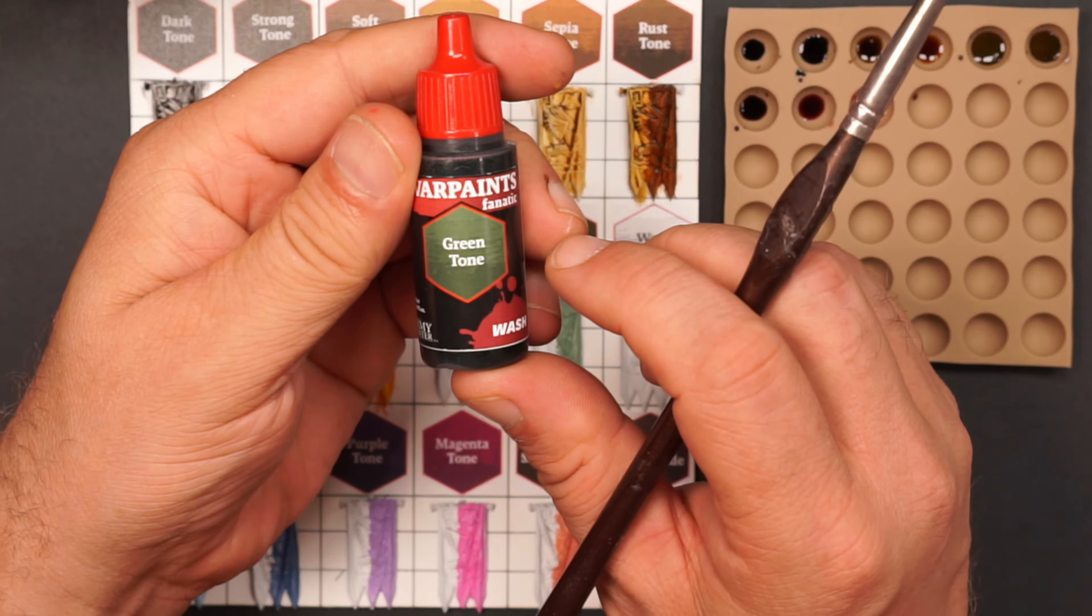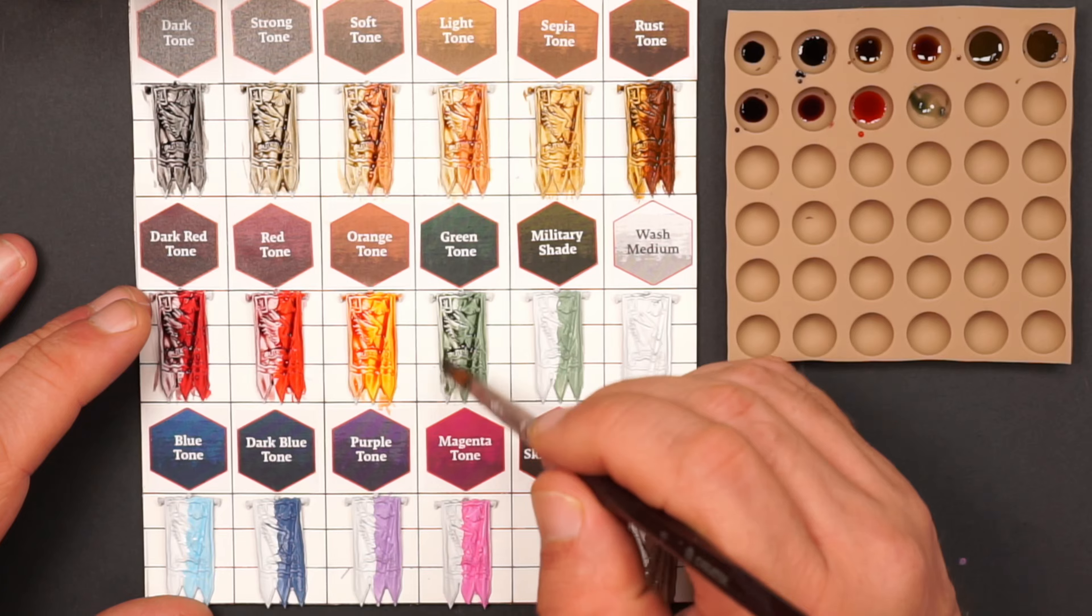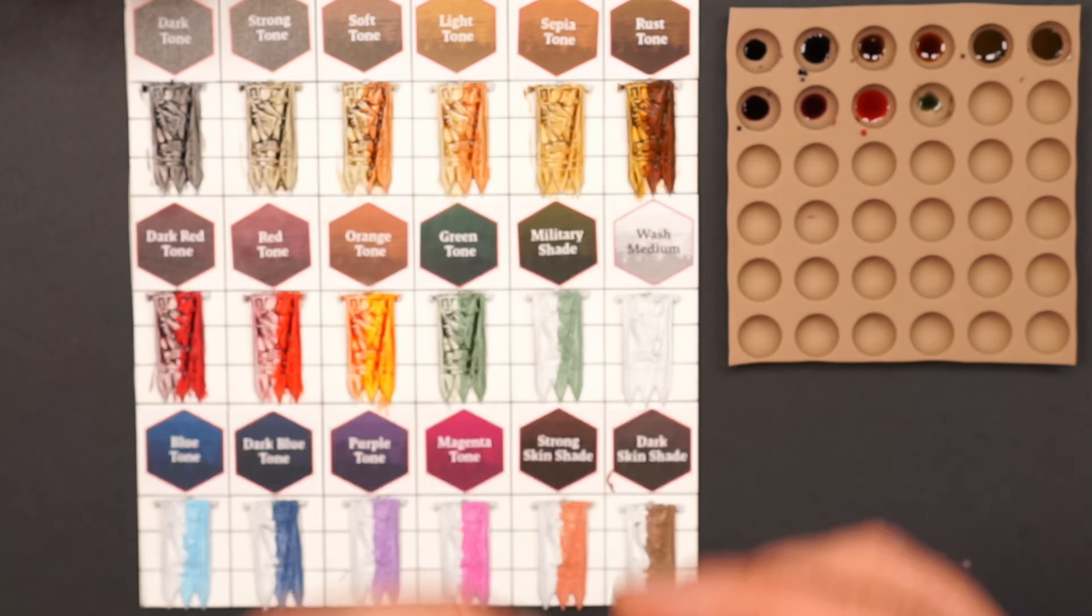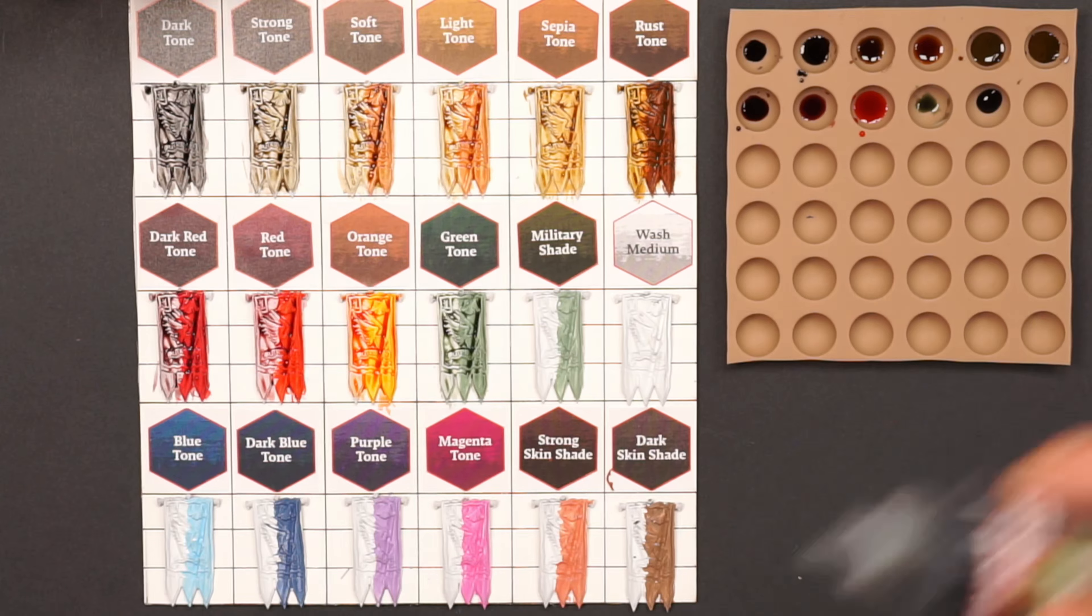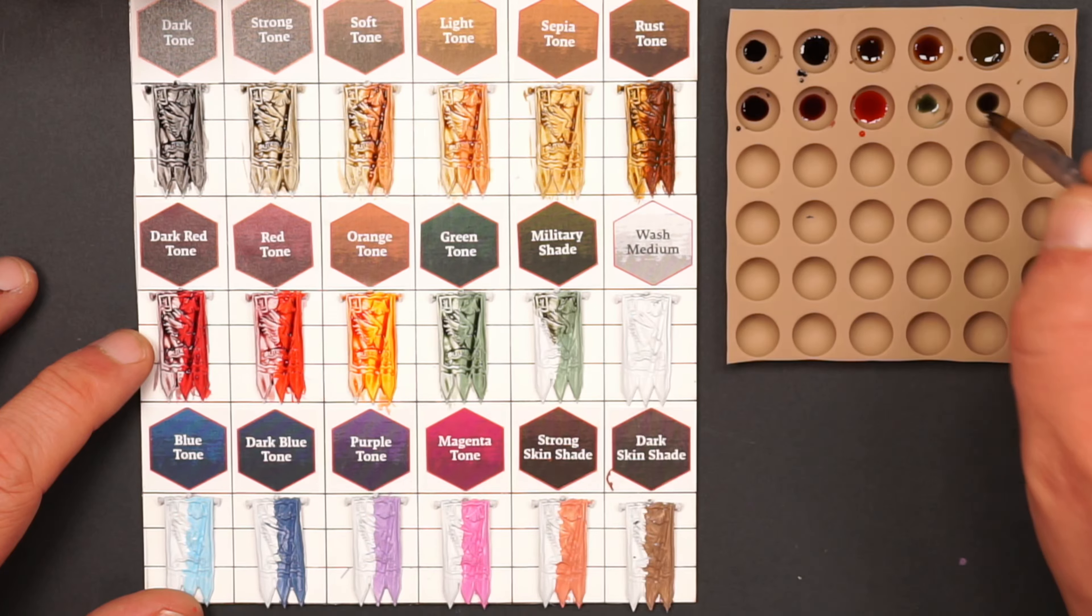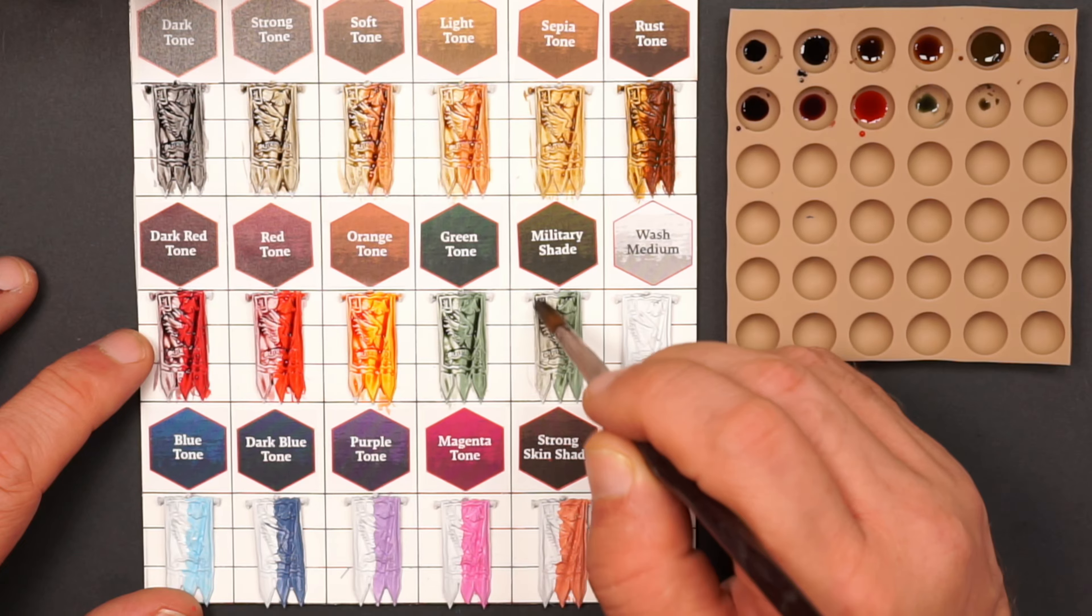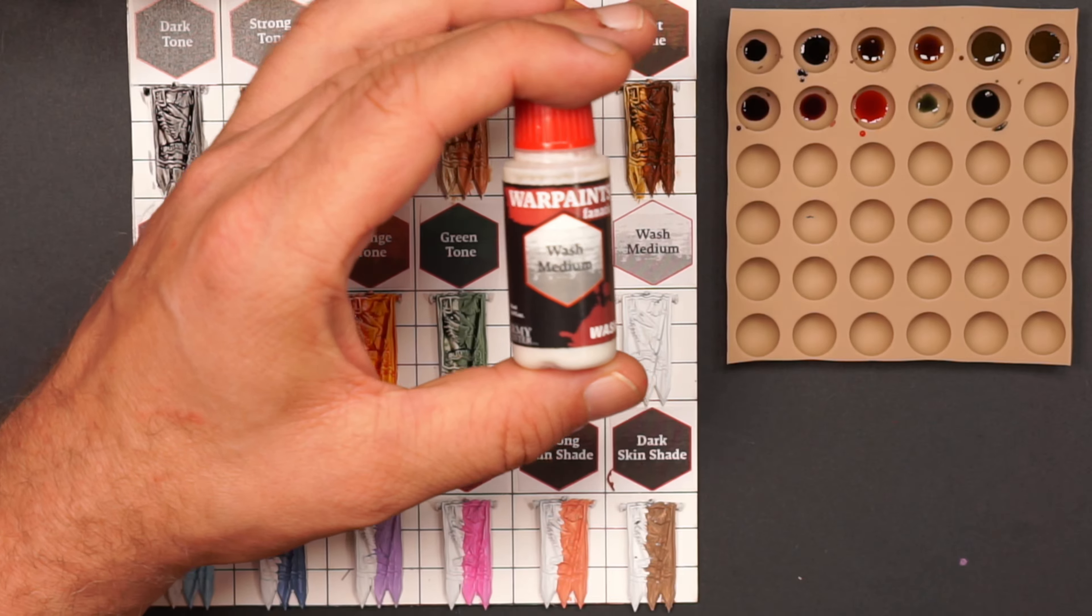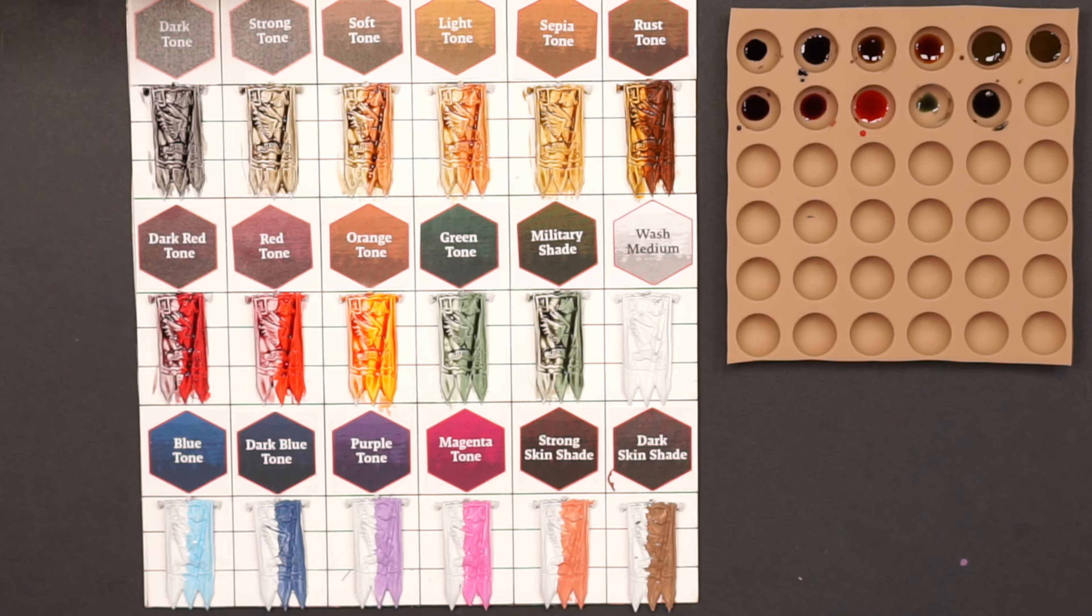The green tone is still the same as it was in the old wash set. It still works and behaves the same as the old, so there's no changes here. And the same goes for the military shade. This is a bit darker and more pale green tone, and it is still the same as the old military shade color from the Army Painter's old set. Then we have the wash medium. I can't apply this to the banner by itself, but we will get back to that later on how it works.